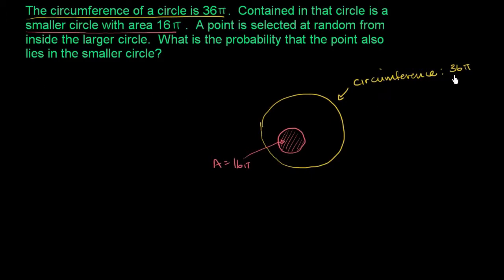So there's a temptation to just use this 36 pi. But we have to remember, this was the circumference, and we need to figure out the area of both of these circles. And so for area, we need to know the radius, because area is pi r squared. We can figure out the radius from the circumference by saying circumference is equal to 2 times pi times the radius of the circle.